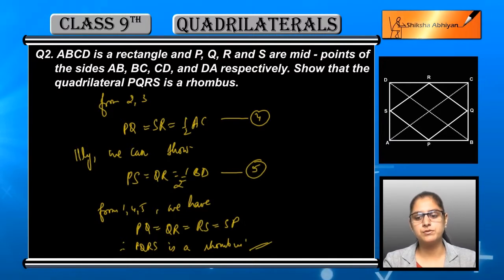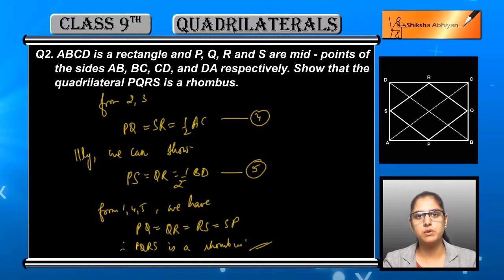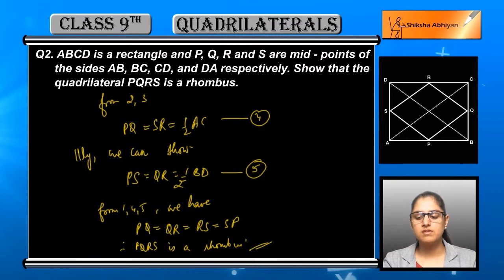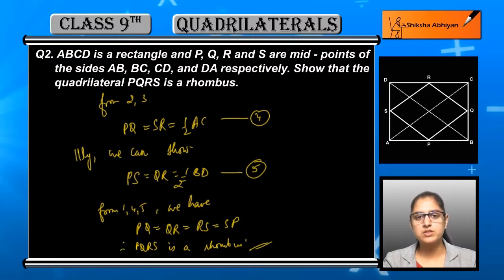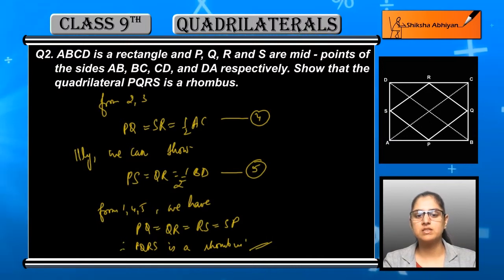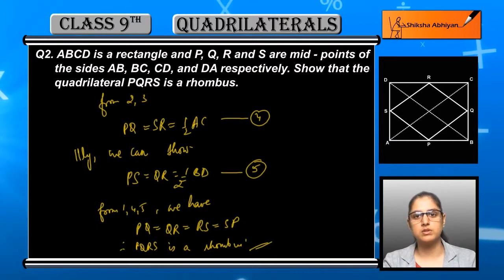Now using equations one, four, and five together, we can say that PQ is equal to QR is equal to RS is equal to SP. Since all four sides are equal, PQRS is a rhombus.